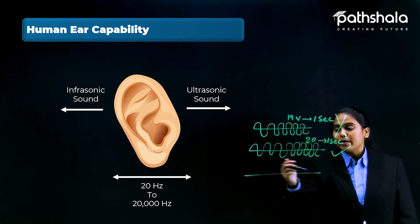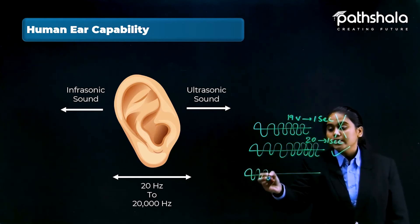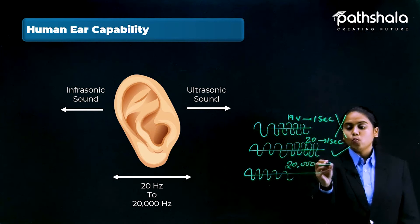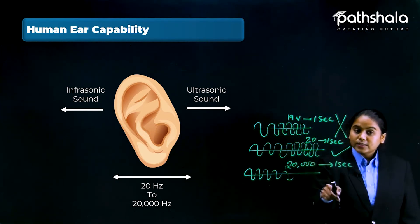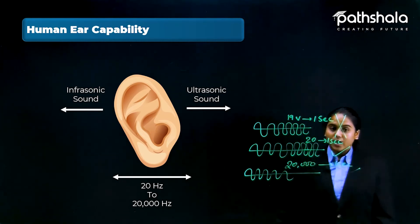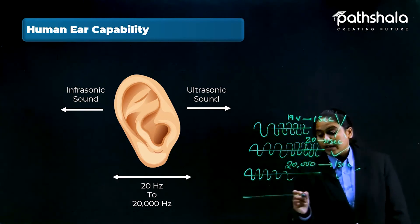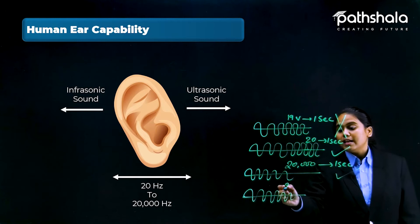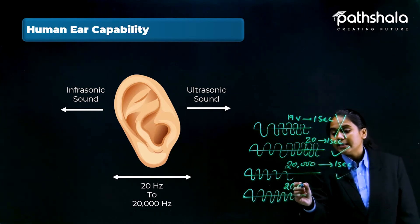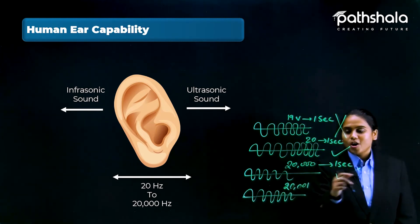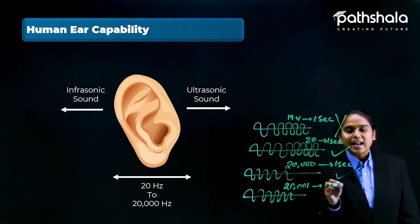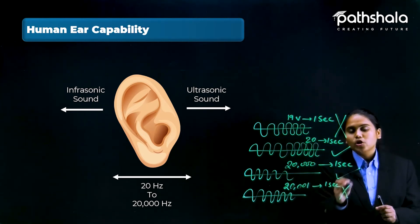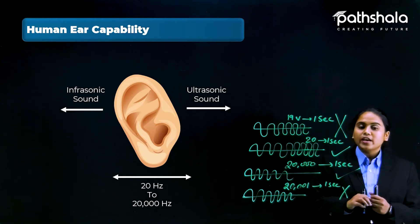In the same manner, if a sound is produced by 20,000 vibrations in one second, it can also be heard by us. But if the vibrations are 20,001 in one second — just one more — then that sound could not be heard by us.